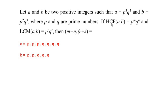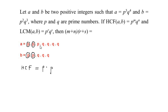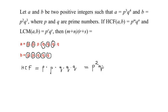Let us first find the HCF of the two integers. HCF is the common factors between the two integers, so let us circle out the common terms from a and b. There is one p and one more p common from a and b, so we write p times p. Then there are three q's common in a and b, so we write q times q times q. In short, HCF is p to the power of 2 times q to the power of 3.